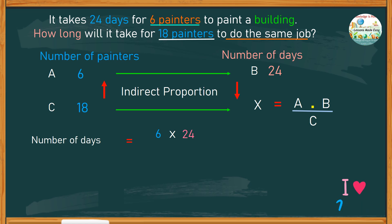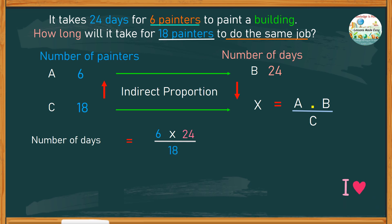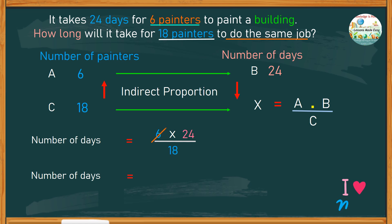The product of a and b will then be divided by the value of c, which is 18, to find the number of days. We can simplify the given numbers — we can reduce 6 and 18 to 1 and 3.